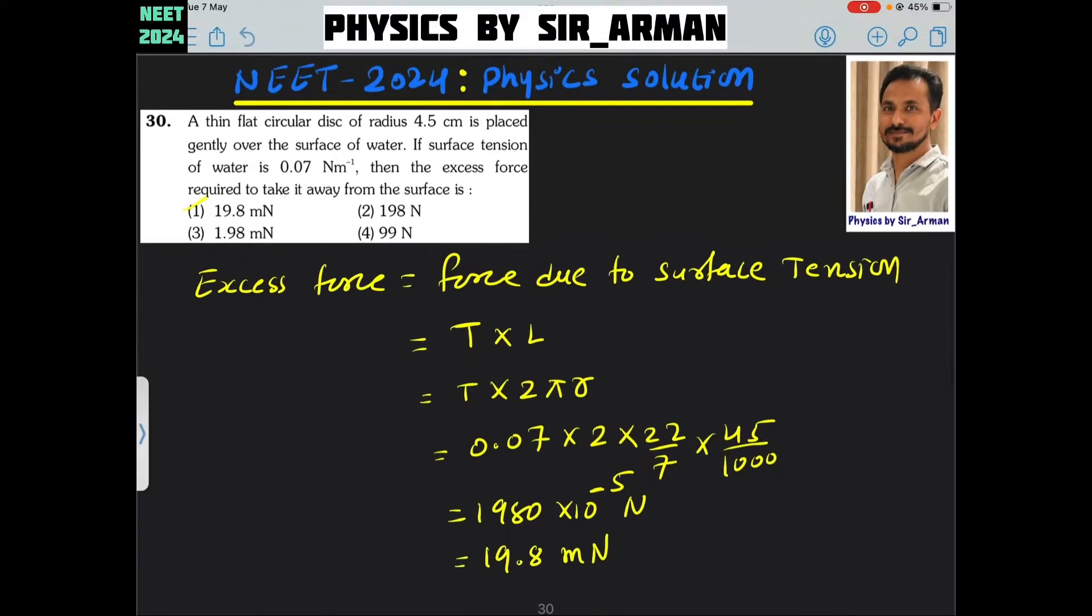Question number 30. A thin flat circular disc of radius 4.5 centimeters is placed gently over the surface of water. If surface tension of water is 0.07, then the excess force required to take it away from the surface is: